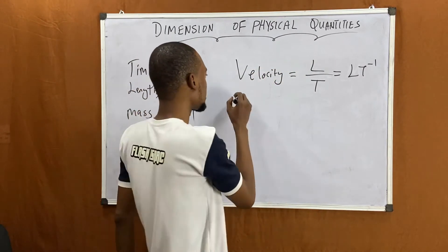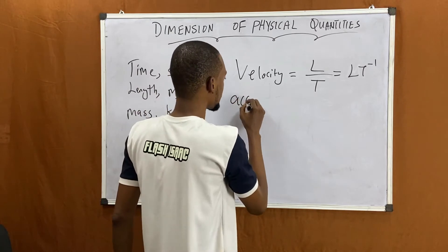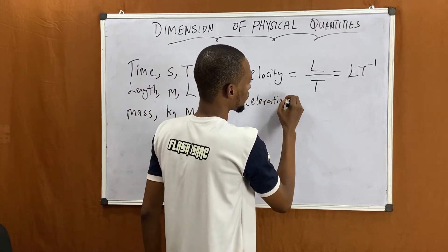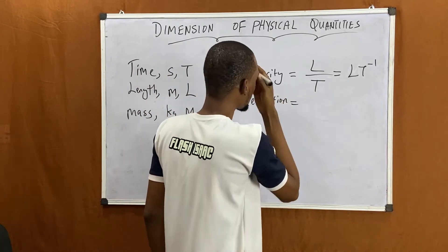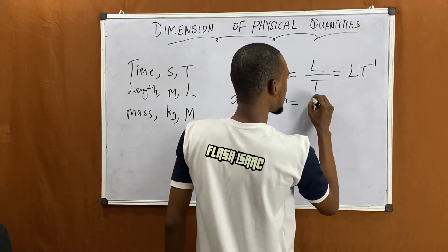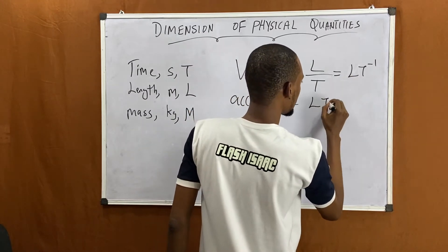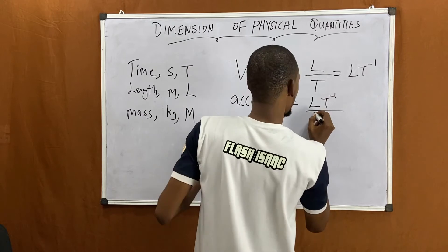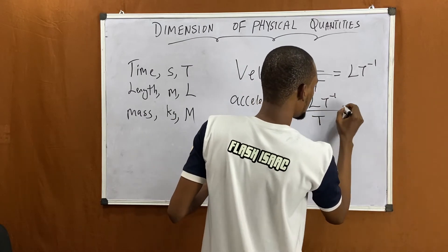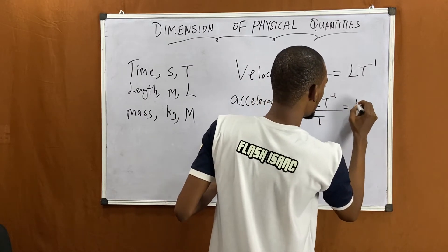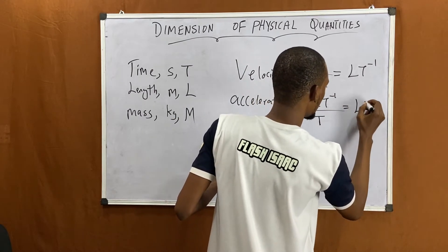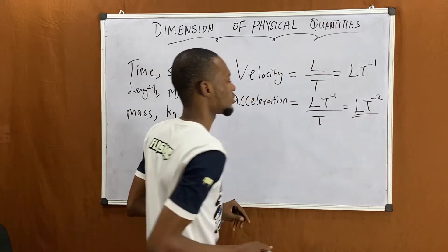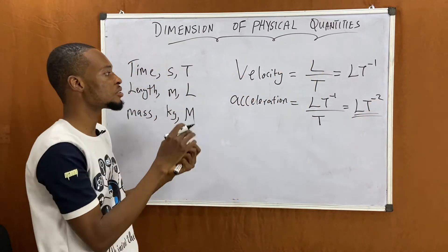Acceleration is change in velocity over time. Velocity is already L·T⁻¹, divided by another T, so this gives you L·T⁻². That's the dimension for acceleration.